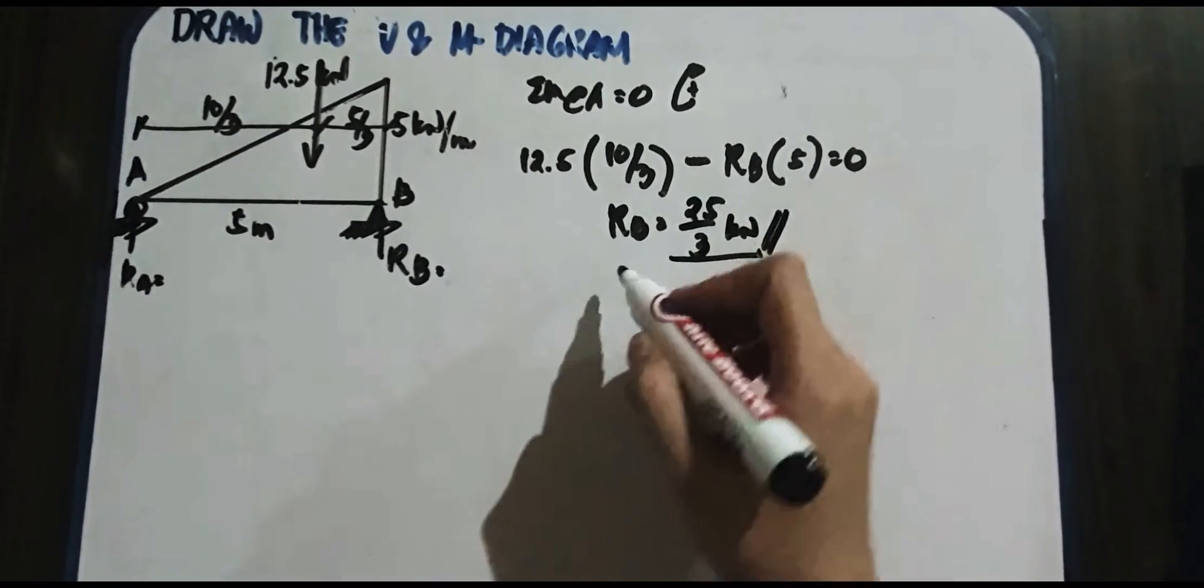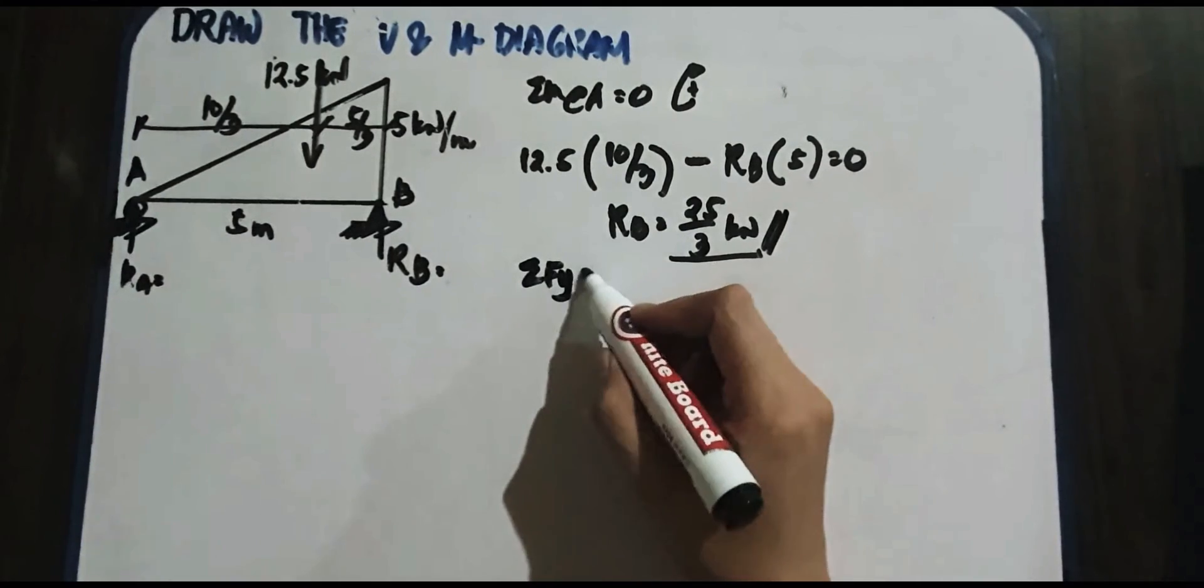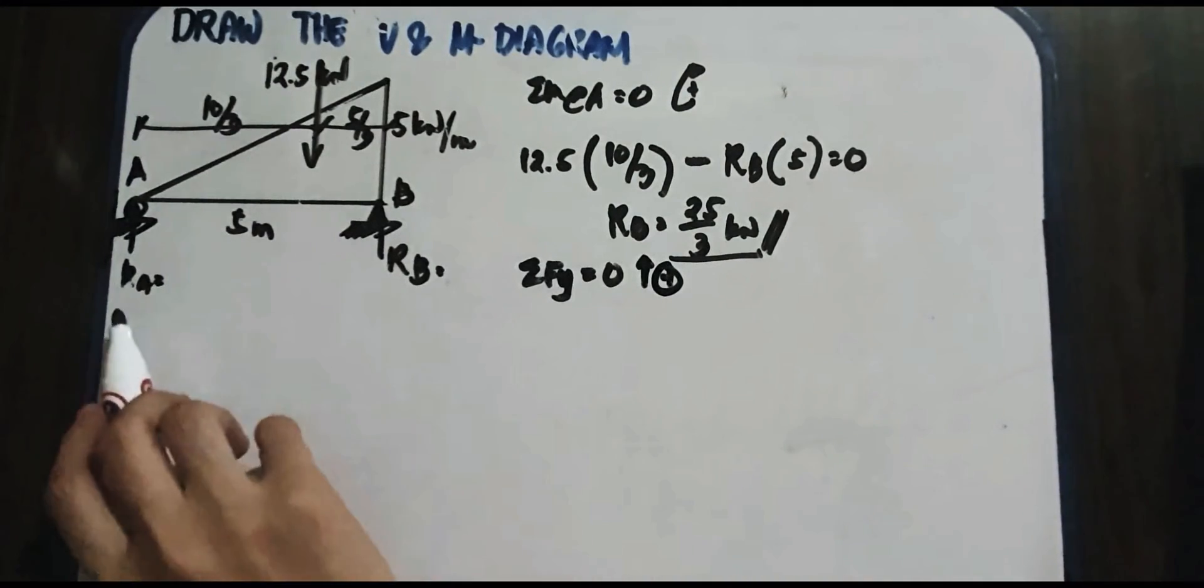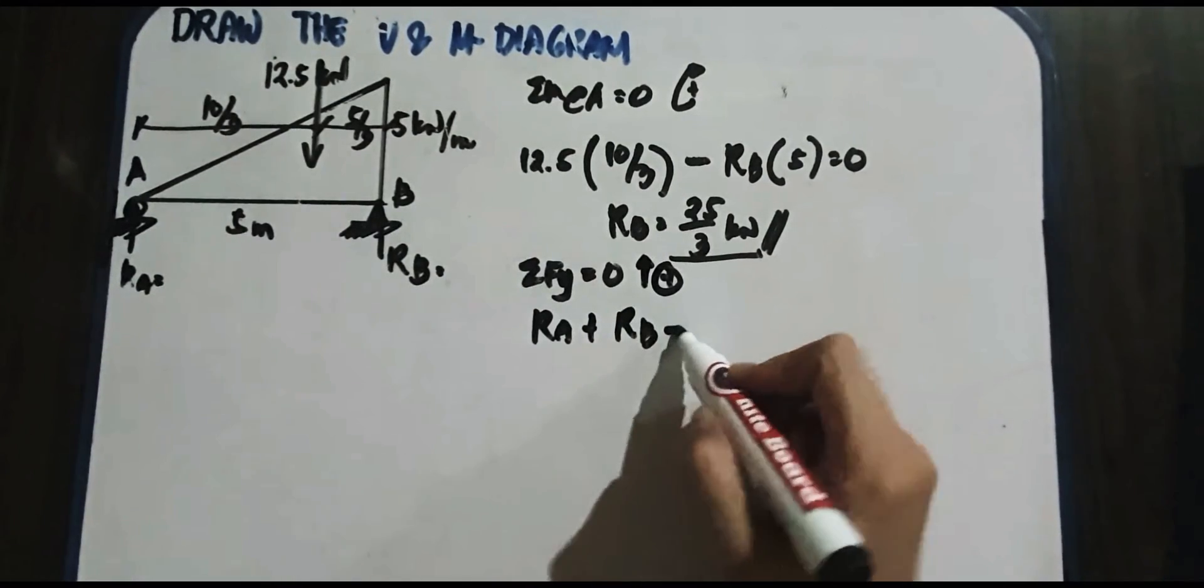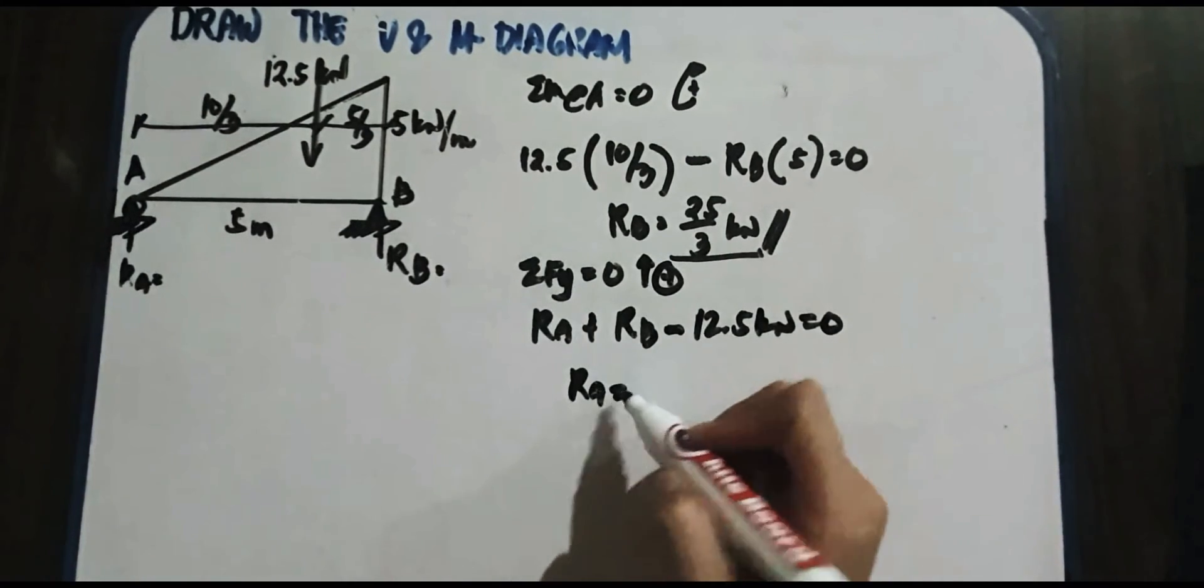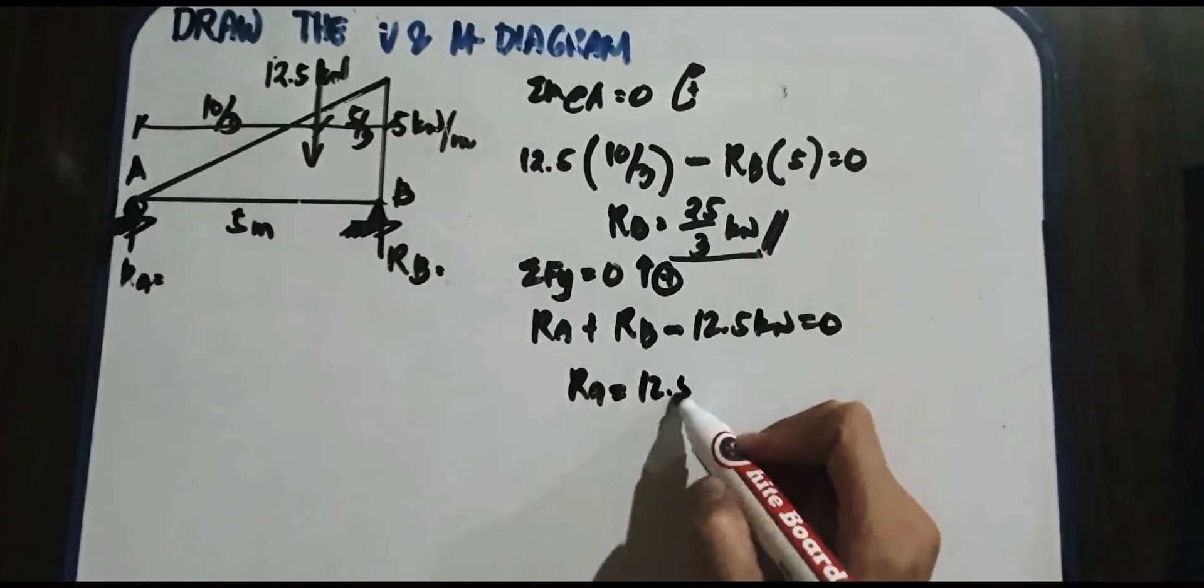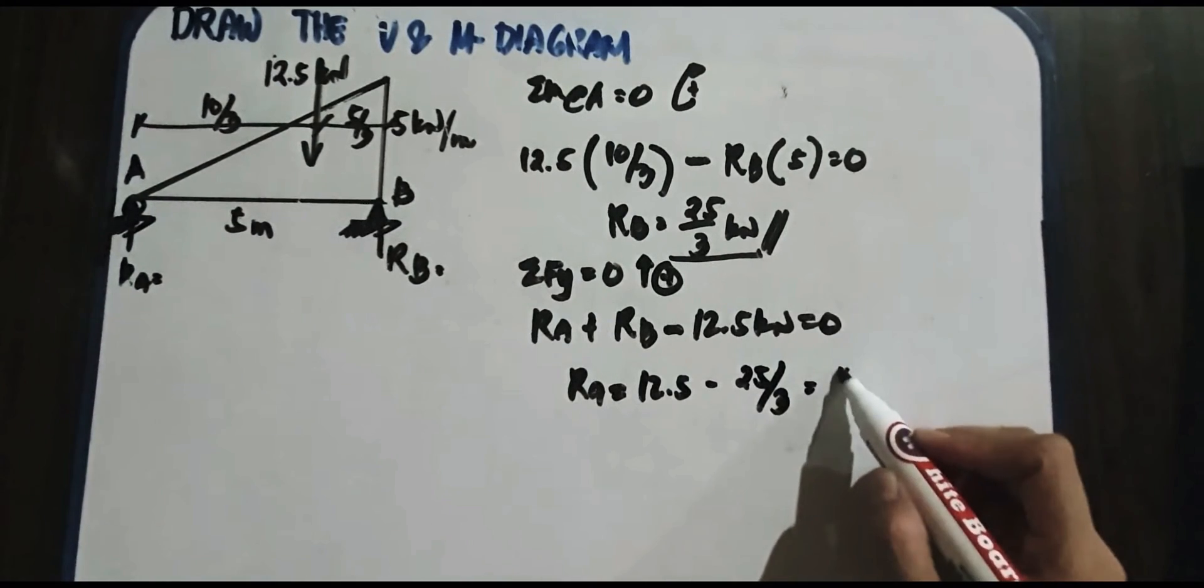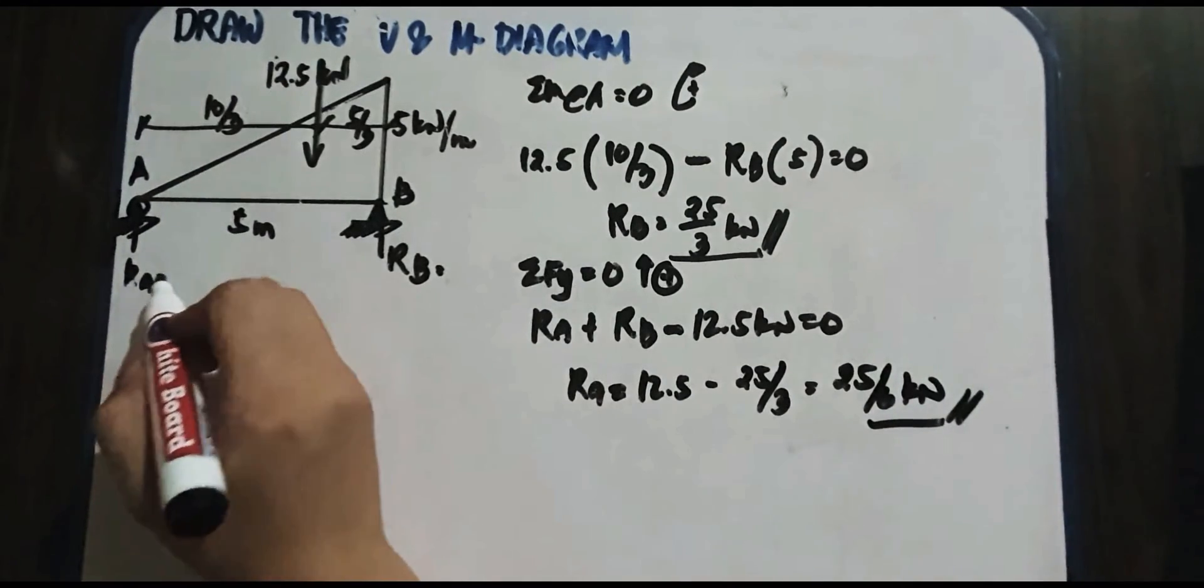That is for the reaction at B. Okay, so how about reaction at A? We have summation forces y is equal to 0 upward is positive. So as you can see, R_A and R_B is positive. So R_A plus R_B minus 12.5 kN is equal to 0. So we have R_A is equal to 12.5 minus 25 over 3. So that is 25 over 6 kN. So that is for R_A.